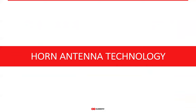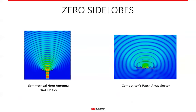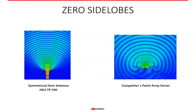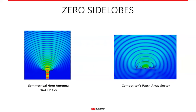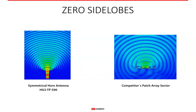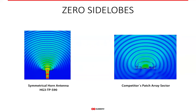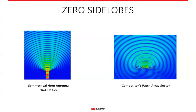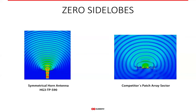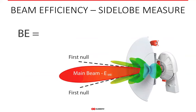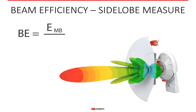Horn sector antennas are by far the most effective technology to deal with RF noise in unlicensed networks. While the traditional sector radiates pretty much in every direction, the horn radiates only in the direction of the main lobe — zero side lobe radiation pattern. Since side lobes collect and transmit noise, getting rid of side lobes equals getting rid of noise. There is a measure for this: beam efficiency, which is the ratio of the energy contained in the main lobe to the total energy an antenna radiates. The higher the beam efficiency, the fewer side lobes.